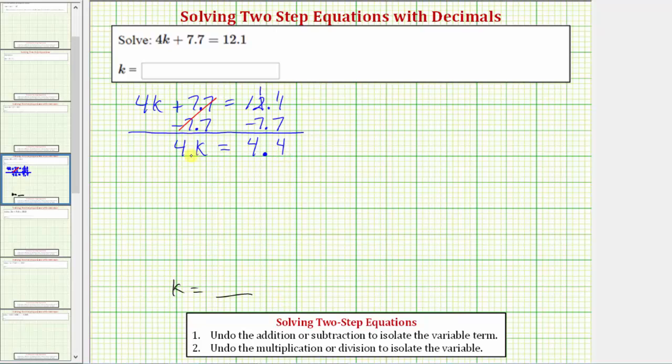The second step is to undo this multiplication. In order to undo multiplying by 4, we'll perform the opposite or inverse operation, which means now we will divide both sides of the equation by 4. On the left, dividing by 4 undoes multiplying by 4, so the left side simplifies to just k. So our solution is equal to this quotient.